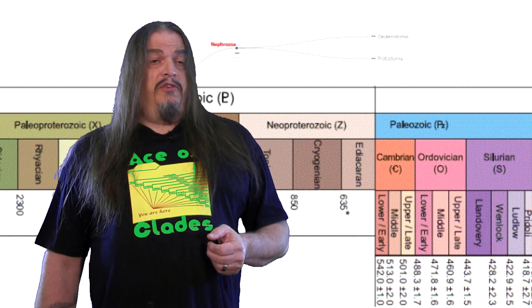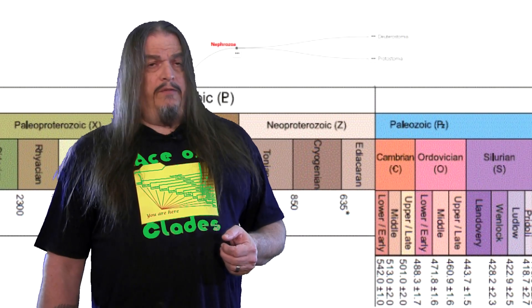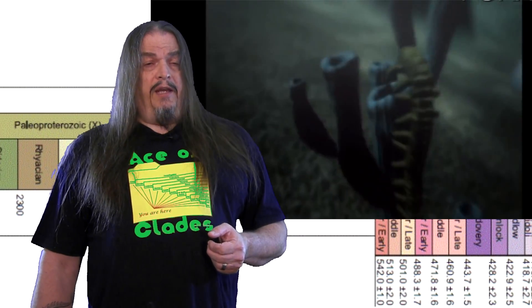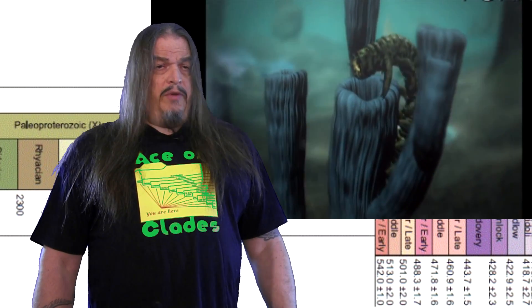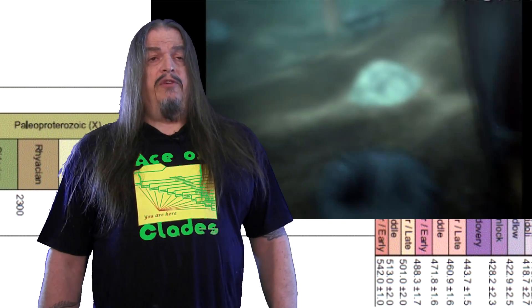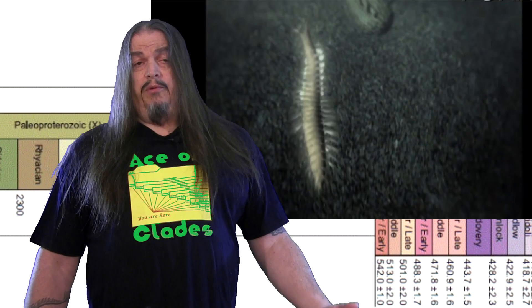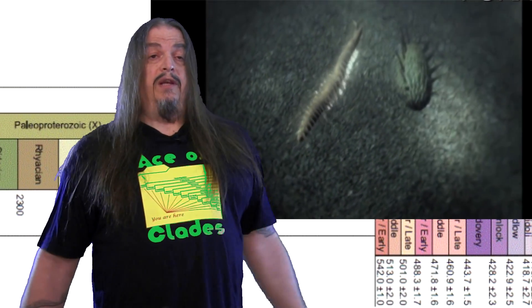The Cambrian period is a block of geologic time beginning roughly 541 million years ago and lasting over 55 million years. It's referred to as an explosion of biodiversity because that's when there was a relatively sudden proliferation of a wide variety of different animal phyla.